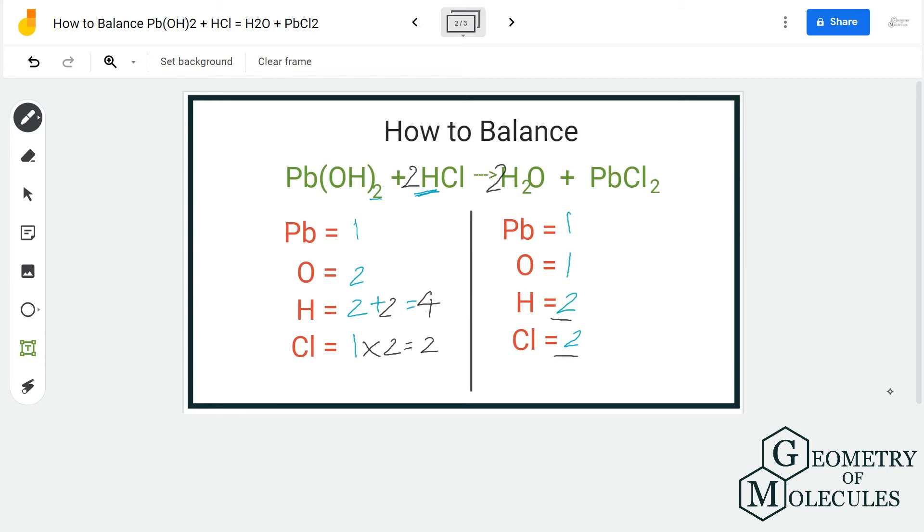Put a coefficient 2 here and now you have two plus two, four hydrogen atoms, and now it changes the number of oxygen atoms as well. So now you have two oxygen atoms and we have one lead atom on both reactant and product side.